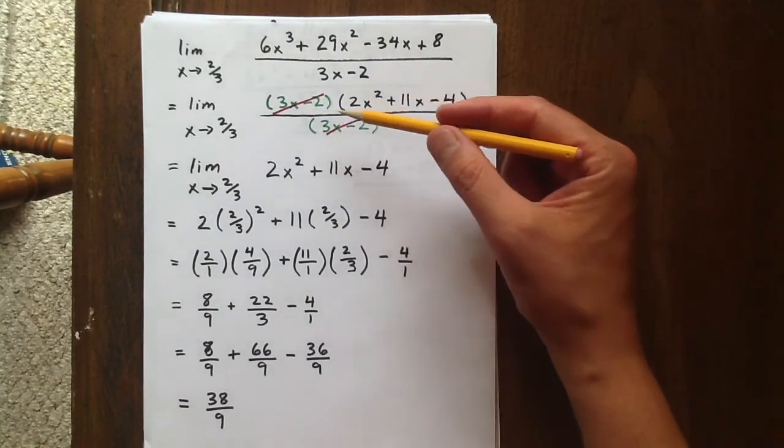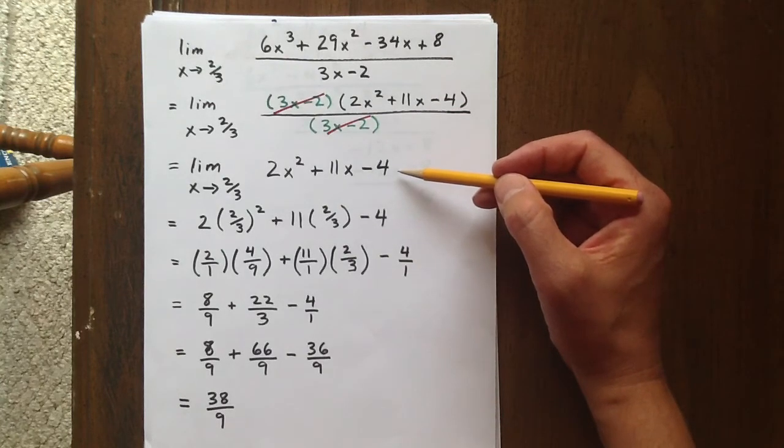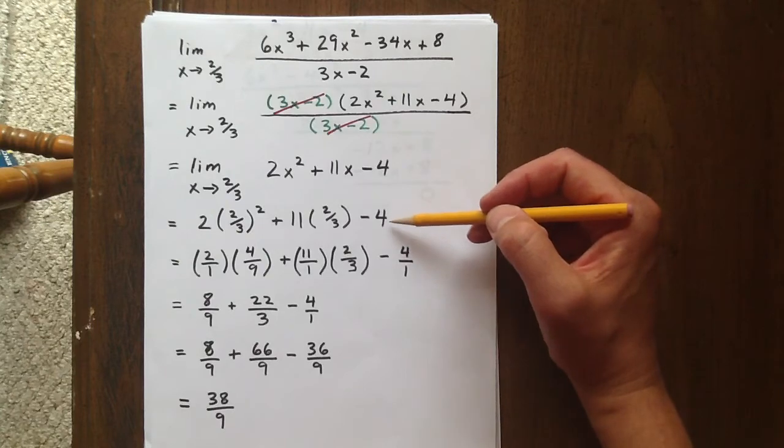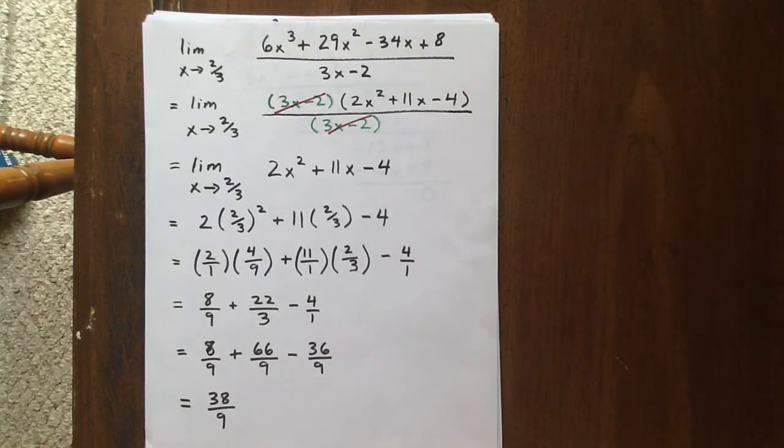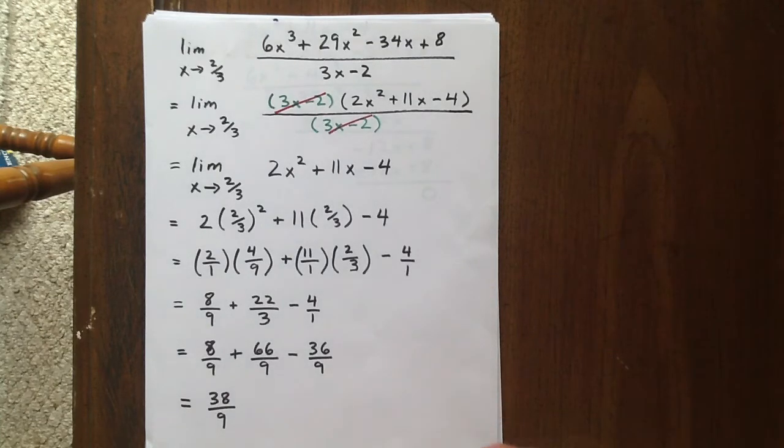Crossing out our common factors of 3x minus two, we have an expression of 2x squared plus 11x minus four. We can now substitute our x value of two-thirds in, and doing some fraction work and finding some common denominators, we get an ultimate answer of 38 over 9 for the limit which we were seeking.